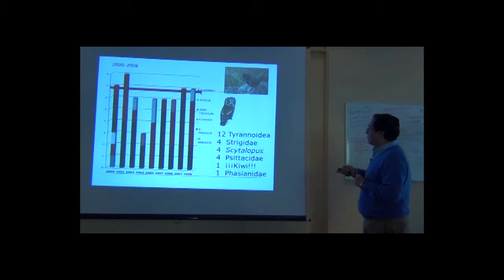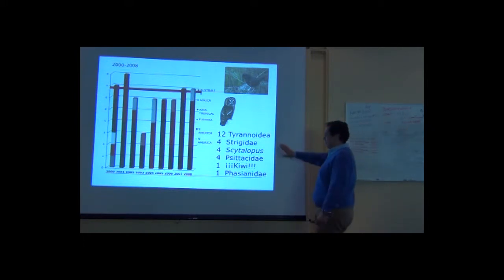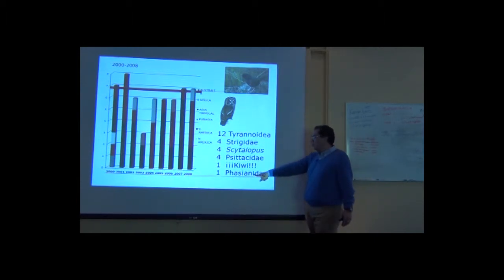We have in birds less species described each year, these new species to science, than in other taxa. But this is a figure that is interesting to see. This is from 2000 to 2008, the number of species that were described each year and the regions where they come. And it is amazing that still in this very well-known group like birds, we have new species from regions that are supposed to be well-known. For example, we have a new species of chicken.